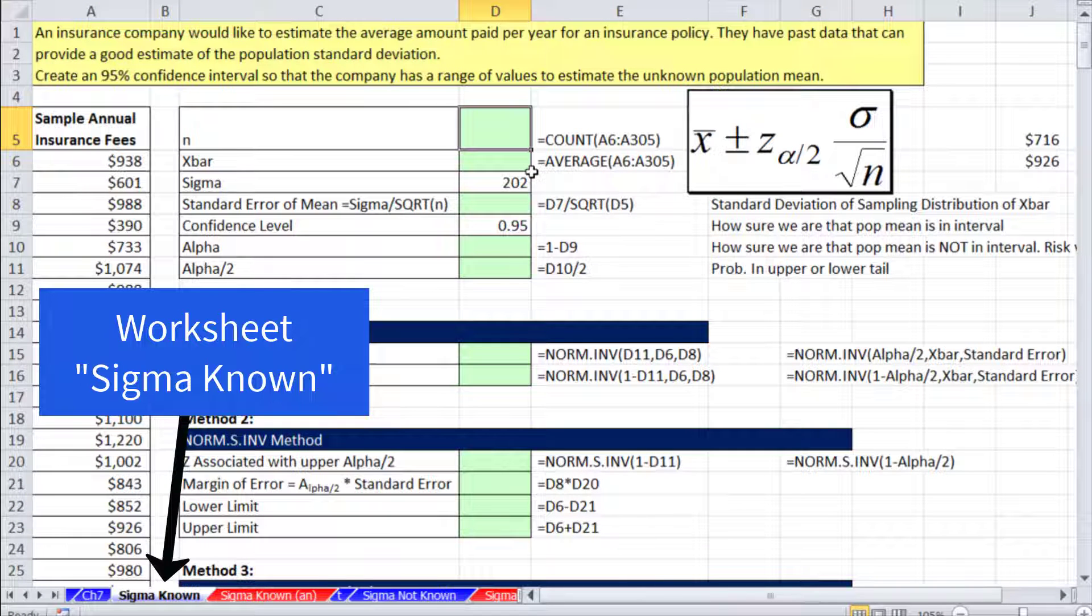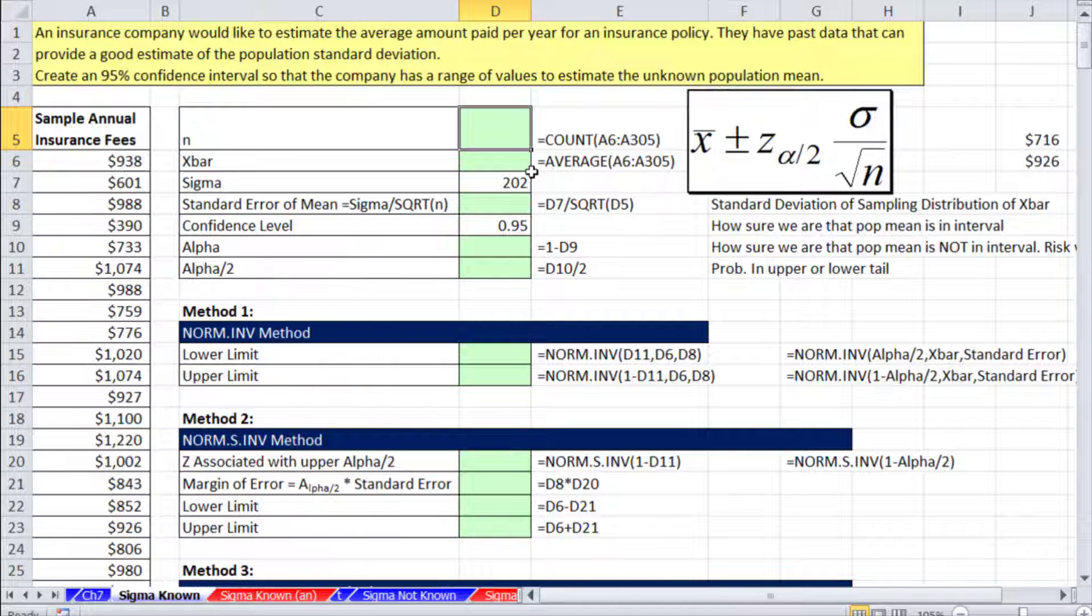In this video, we're going to talk about creating confidence intervals in Excel when sigma is known. When sigma is known, we're allowed to use the Z distribution, the standard normal distribution. Here is our formula. We have x̄ plus or minus. This is called the margin of error. This is called the standard error.